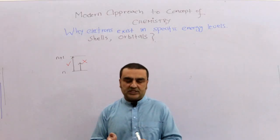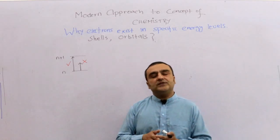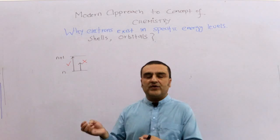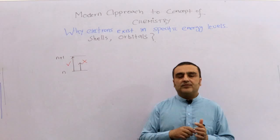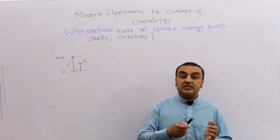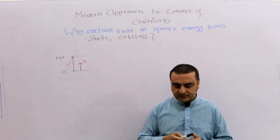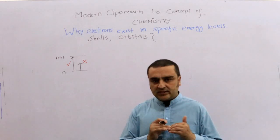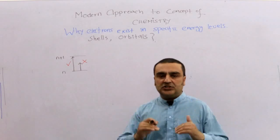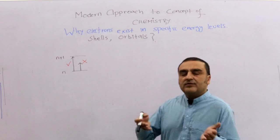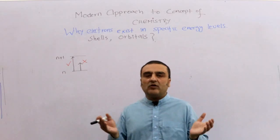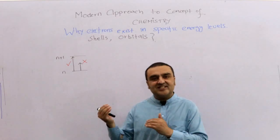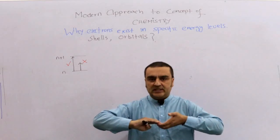Our discussion today will focus on this question. As we know, electrons have a dual nature — they can exist both as a wave and as a particle. It is this wave nature which can explain these sorts of concepts. When two orbitals overlap constructively, their energy is decreased and a bond is formed. Orbitals are those places where the probability of finding an electron is maximum. An electron is a wave, so it is a sort of two waves overlapping or interfering with each other.